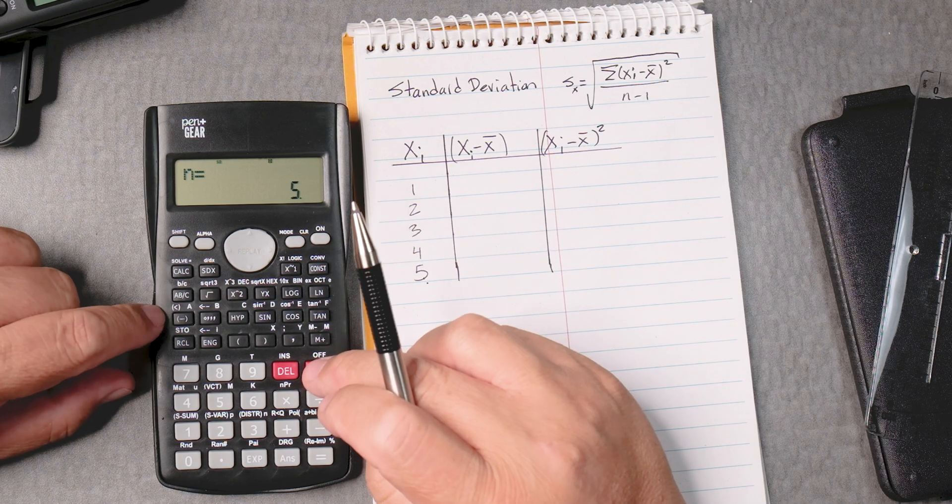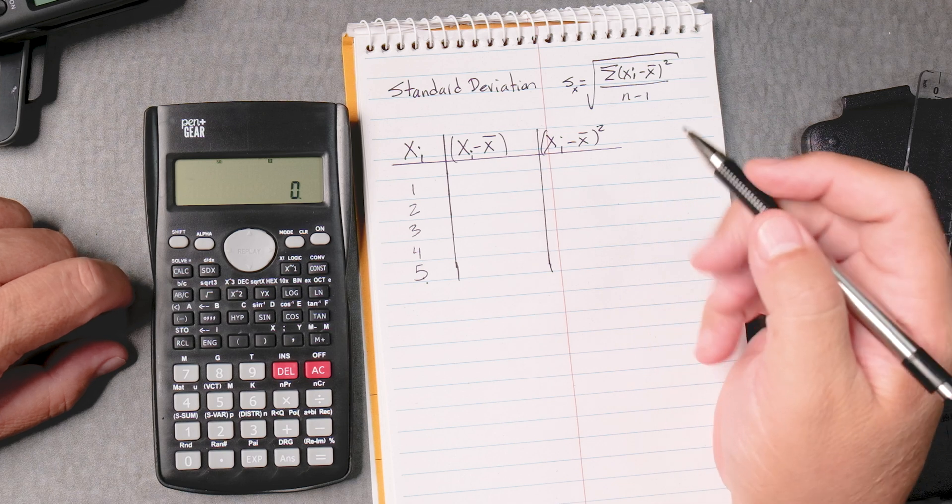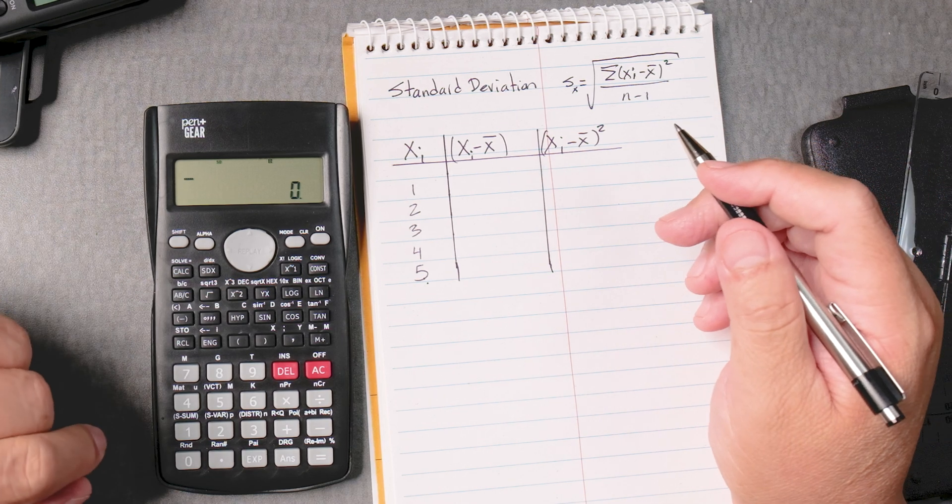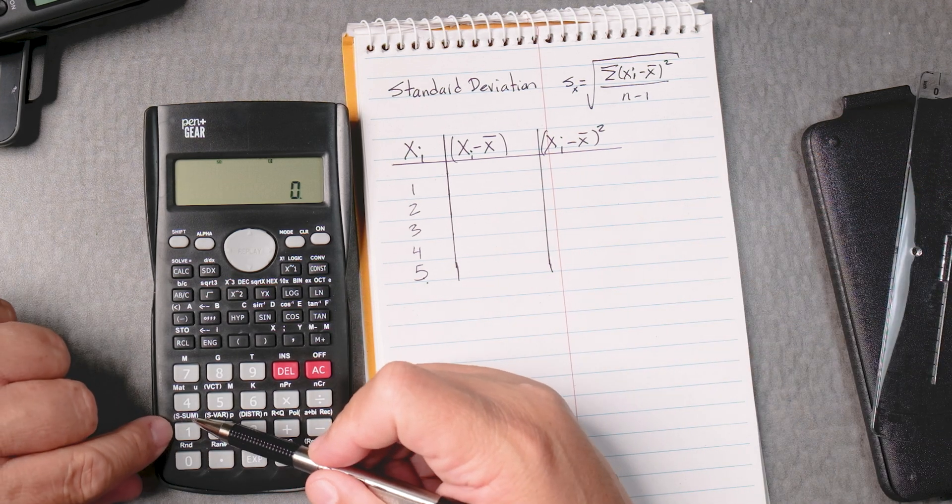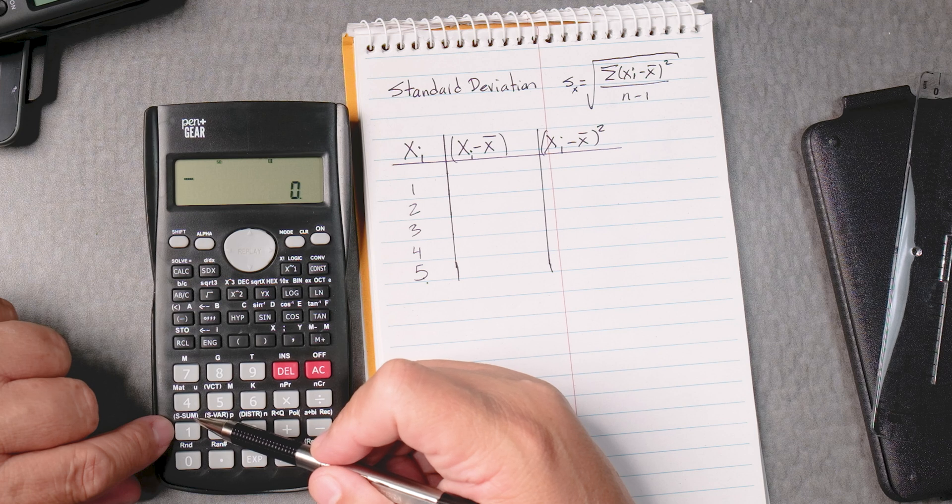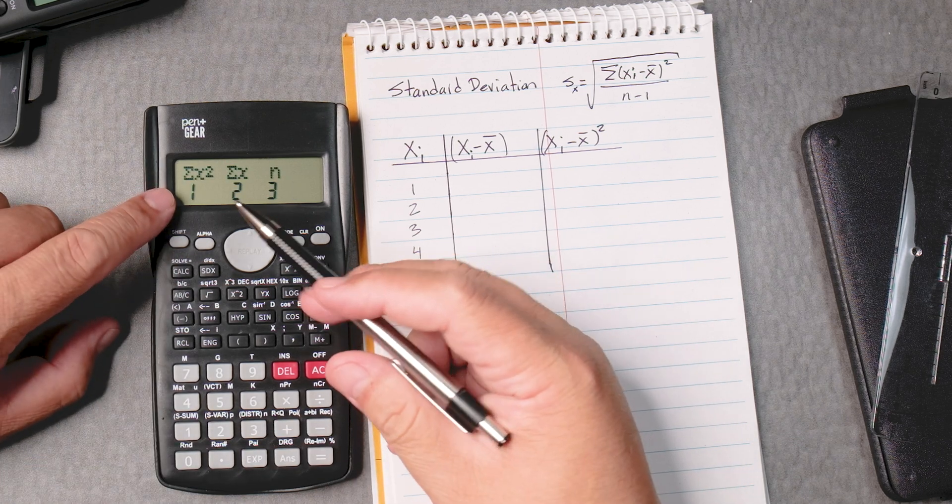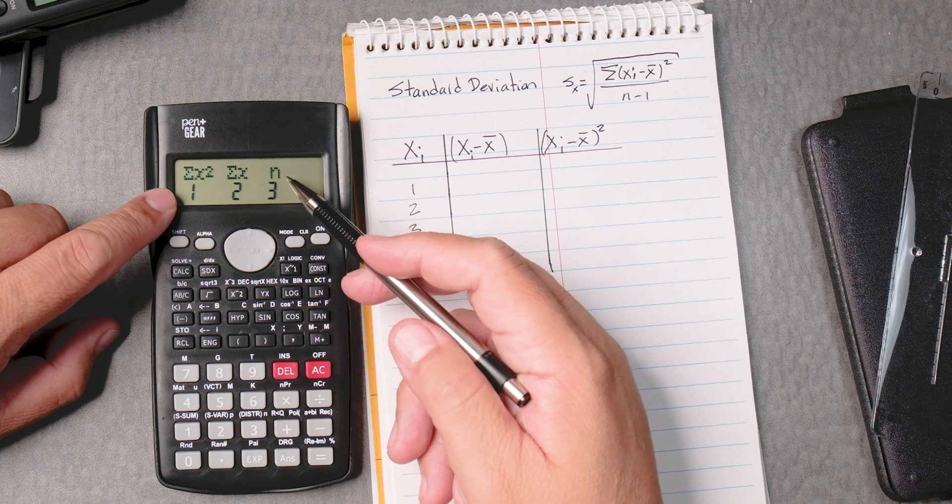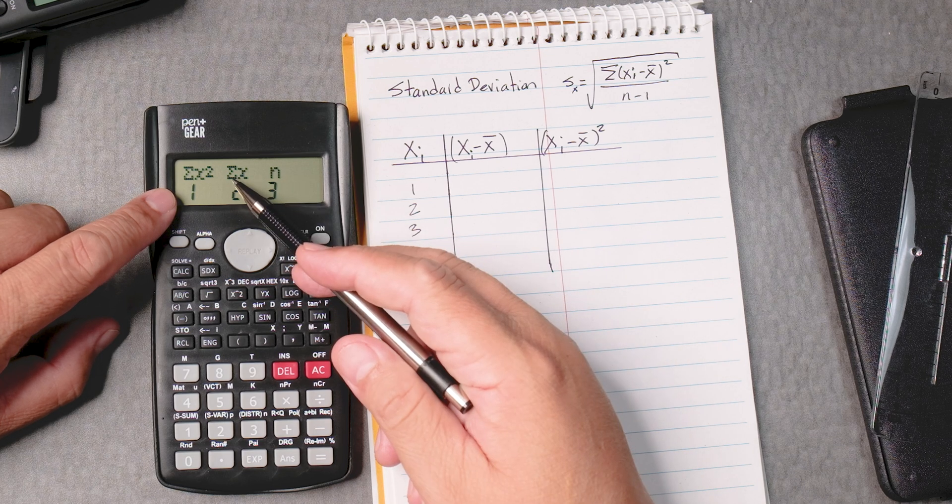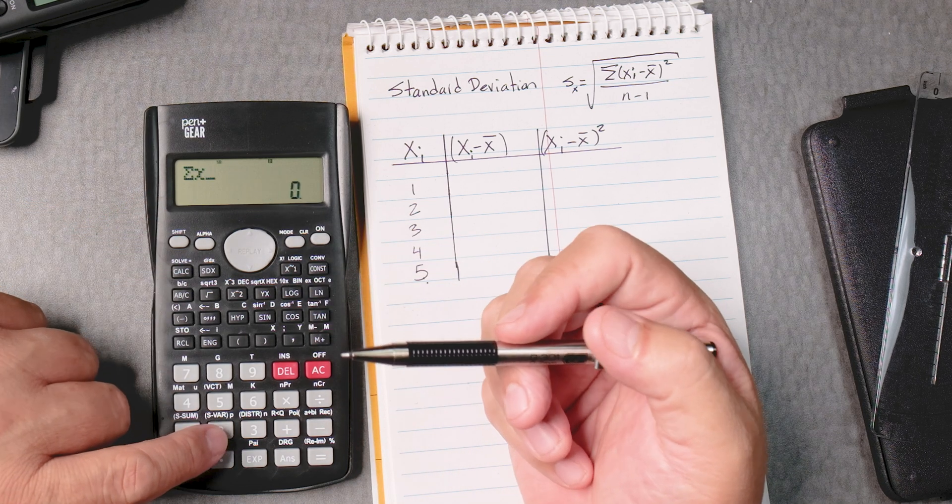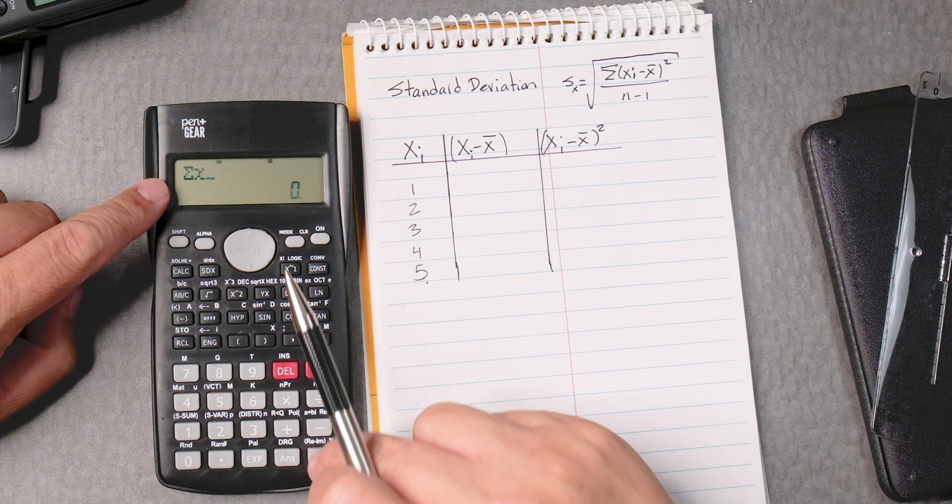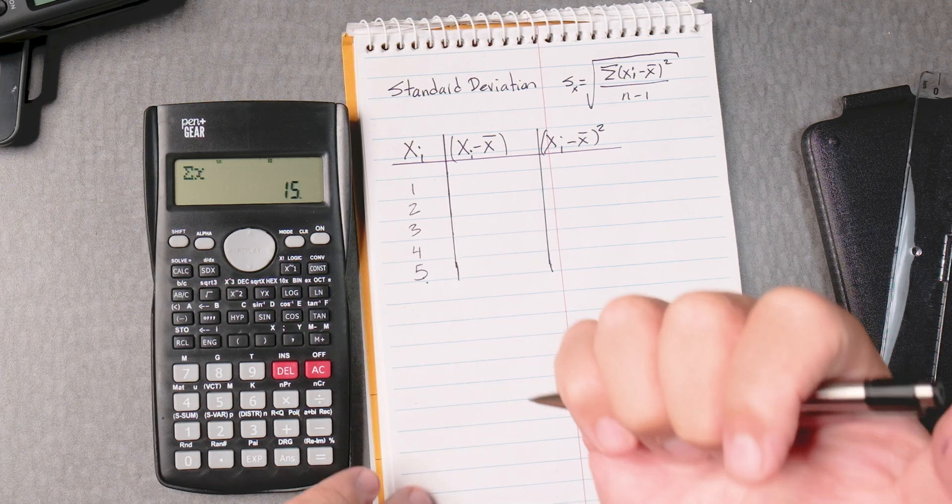Then we can press the AC button. Let's see if we can find some values that are useful. For example, there is a sum submenu, so shift number 1, and then we get the sum of x squared, the sum of x, and then n. We're going to use the sum of x, number 2, so we're going to press 2 and then we have to press equals, and it gives us 15.